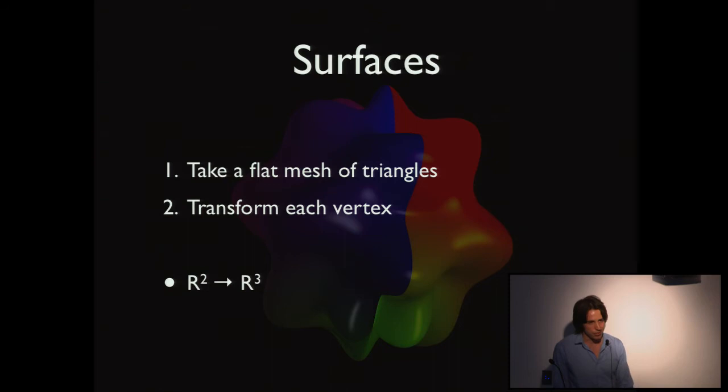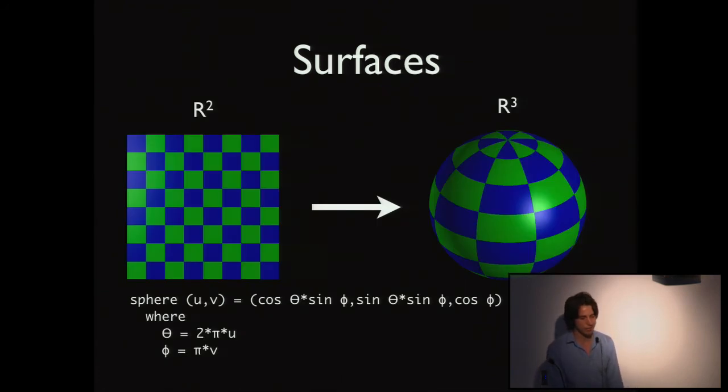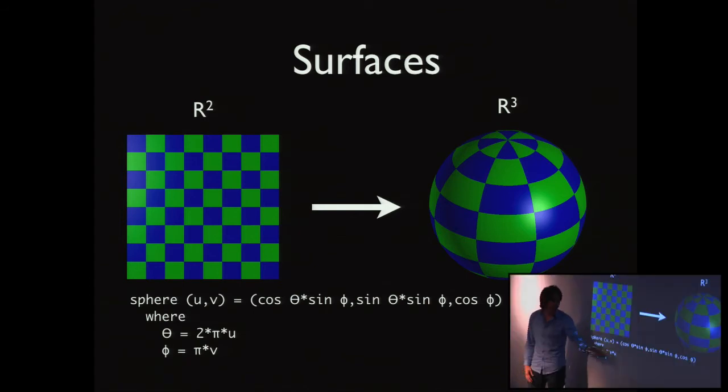With Shady, it's not just 2D images. We also have this notion of surfaces. What we do for a surface is we take a flat mesh of triangles and we transform each vertex. We're essentially specifying a mapping from two dimensions to three dimensions. You've got this mesh with the checkerboard texture mapped on it, and we transform each of the vertices to map it onto a sphere.